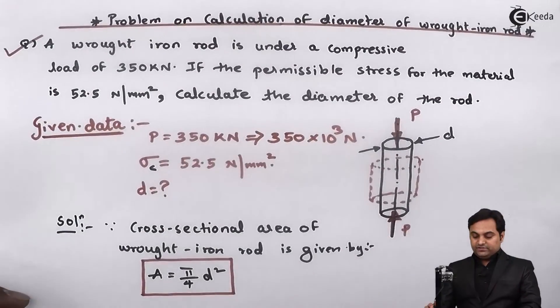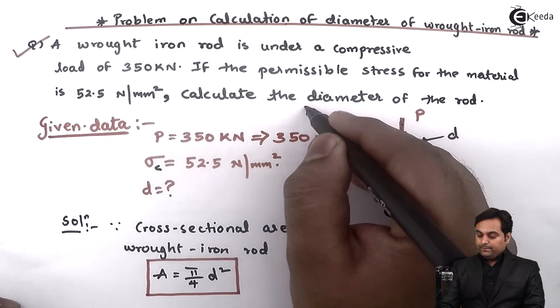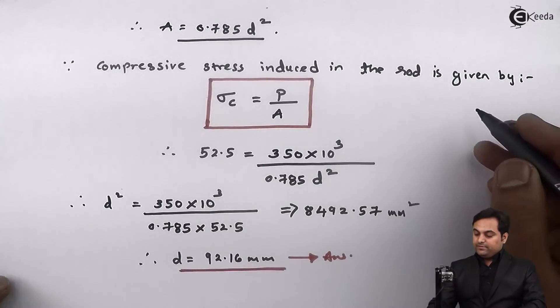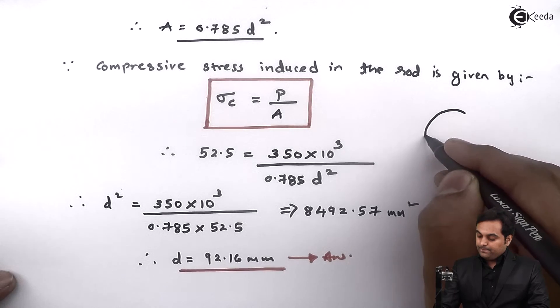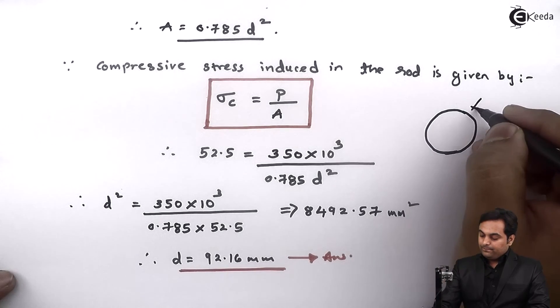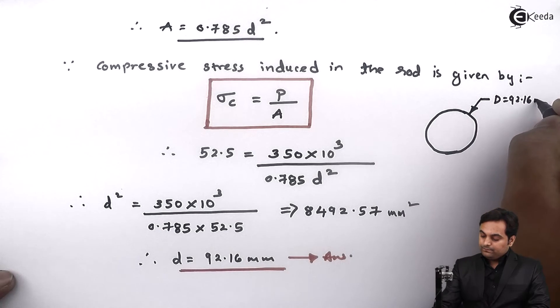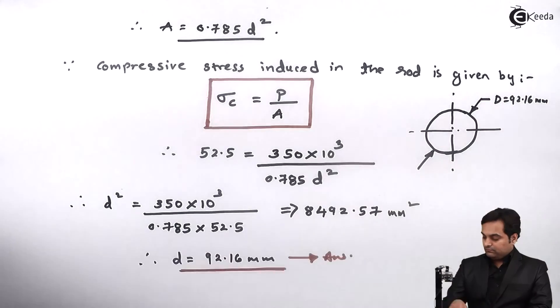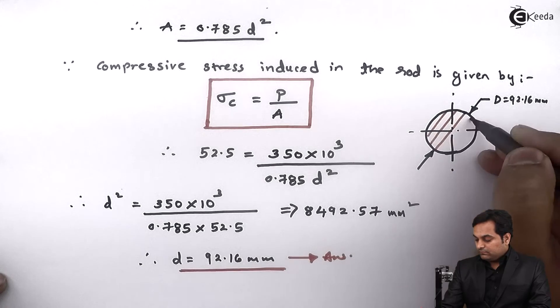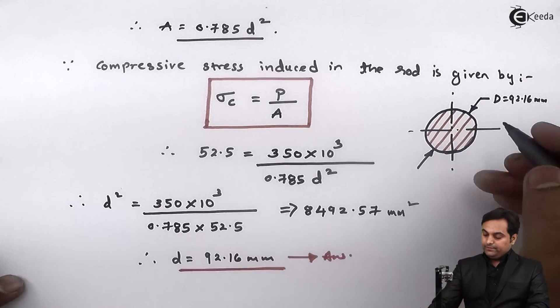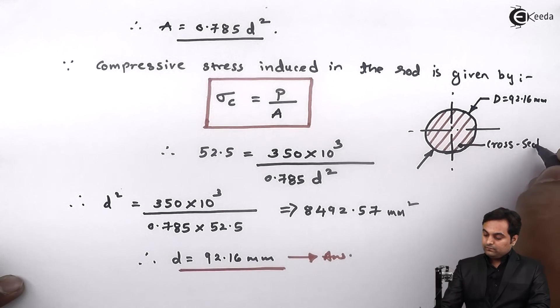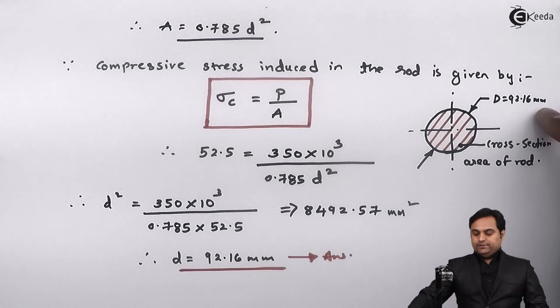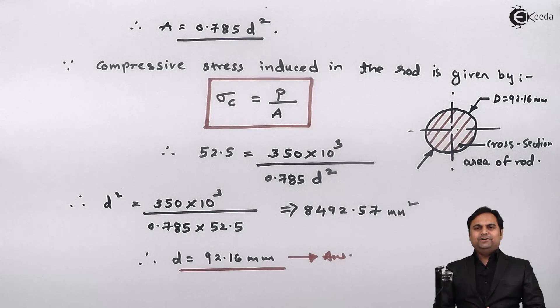Now if we look into the question they were saying to calculate the diameter of the rod, and this diameter of rod we have found out. It is 92.16 mm, so the cross section will be 92.16 mm. So this is the cross section area of the wrought iron rod, and once we have calculated the diameter and indicated the cross section area of the rod we have completed this problem